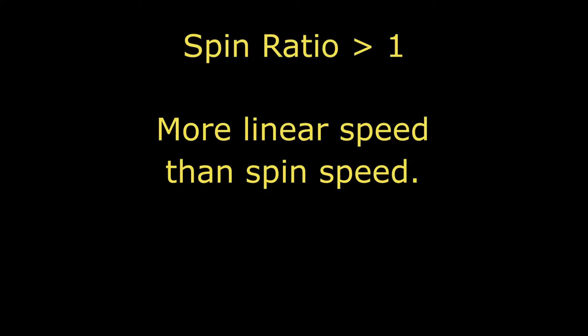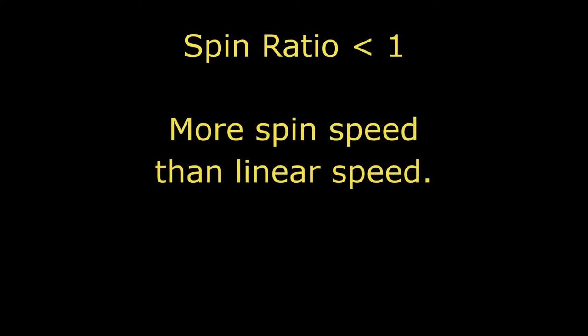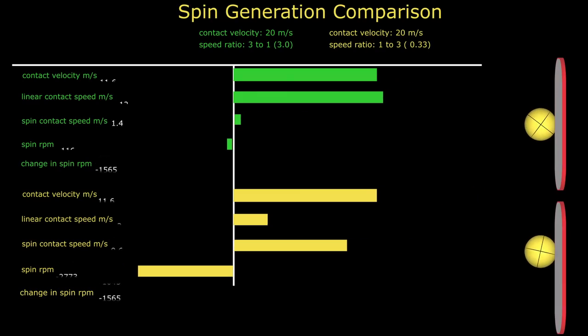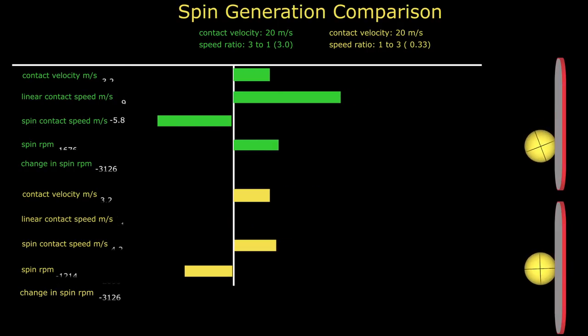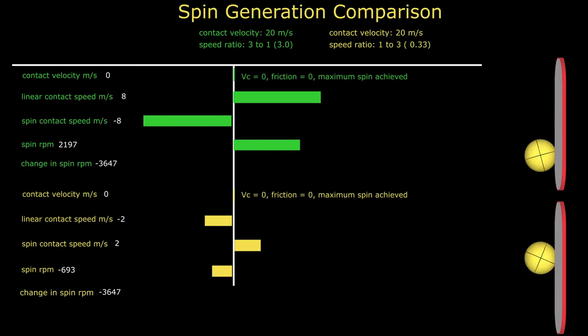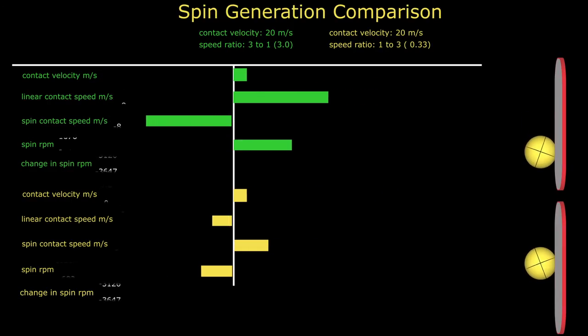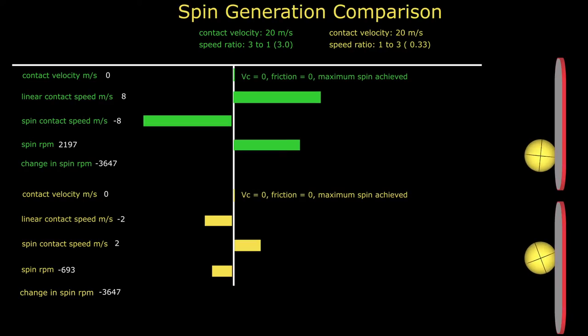Sometimes the spin ratio characterizing the contact velocity will be greater than 1, indicating more linear speed than spin speed. Other times it will be less than 1, indicating more spin speed than linear speed. Combining the spin ratio with the 1.8 times multiplier, we can get some interesting outgoing spin results. For example, the animation shows two such results. The contact velocity for both is 20 miles per hour, but one has a spin ratio of 3, the green, and the other, the yellow, has a spin ratio of 0.33. The colored bars show the changing speeds and spins throughout the impact as each ball evolves toward the condition of equal and opposite linear and spin speeds. In the top green example, the linear speed simply decreases while the spin and its corresponding spin speed changes direction. In the lower yellow example, because there is so much incident spin speed compared to linear speed, it is the linear speed that changes direction as the spin speed is simply decreased.